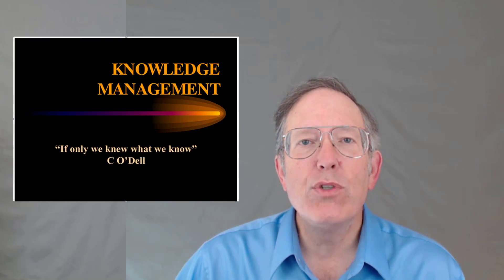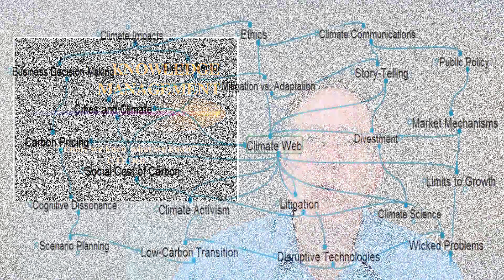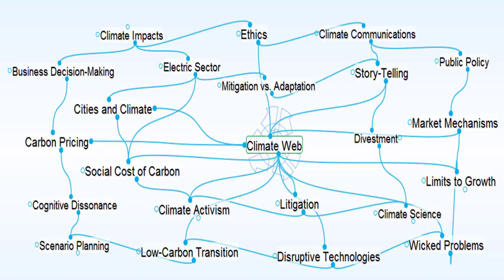What could you do if you knew what we know collectively about climate change? That's what we're exploring with the Climate Web and a unique software called Brain Software, which allows you to organize and link infinite amounts of information in an infinite number of ways,